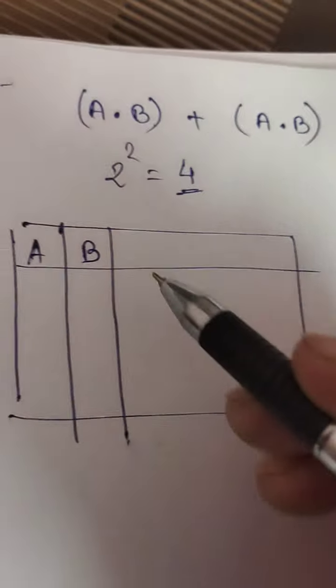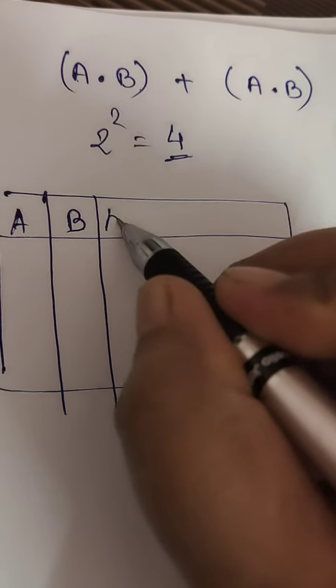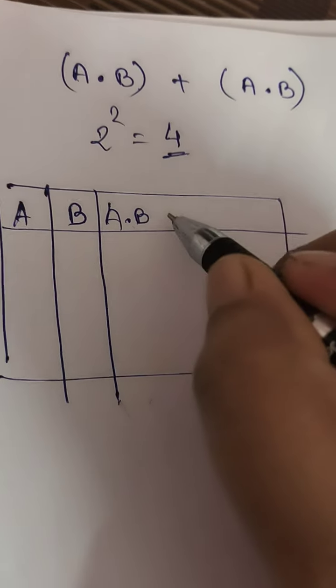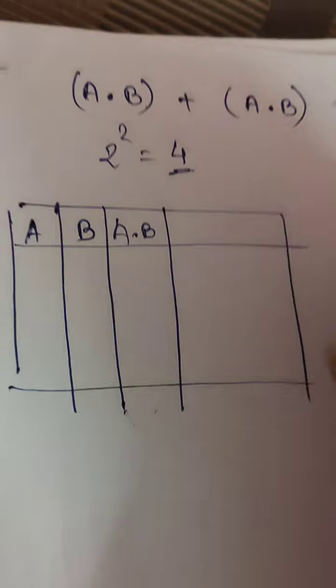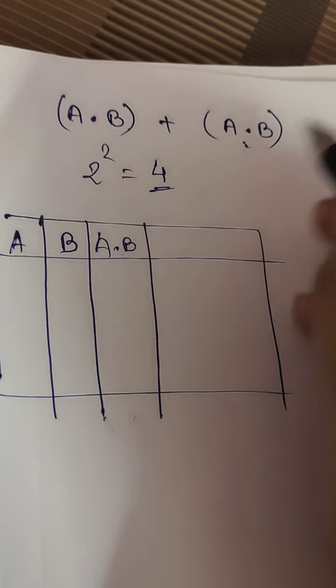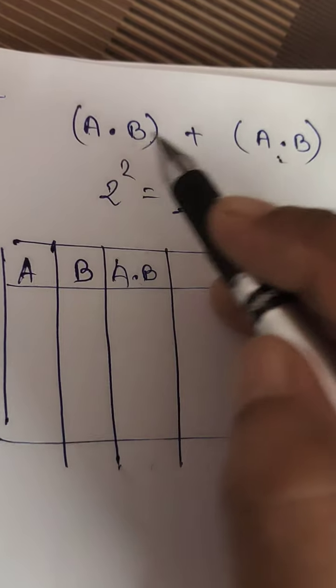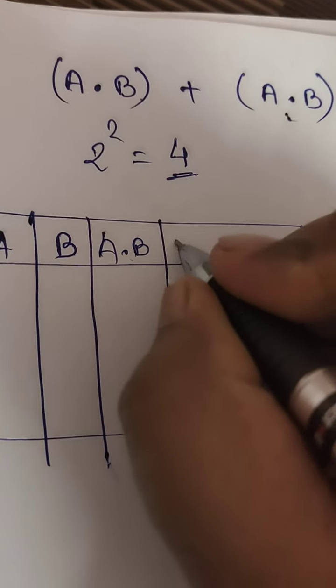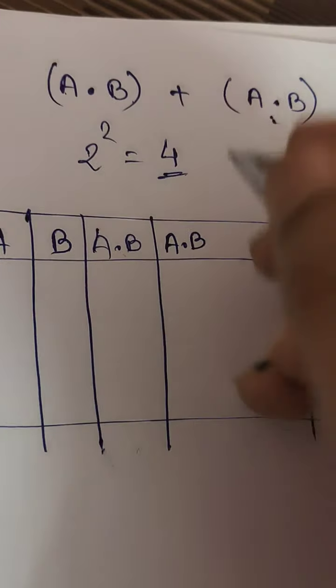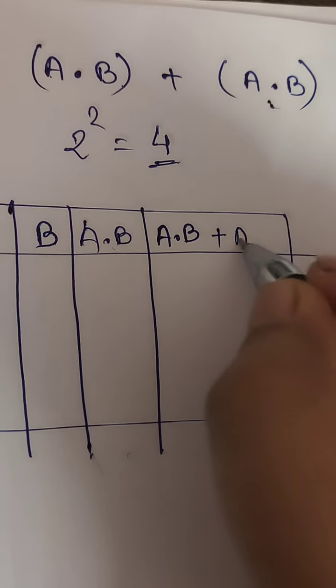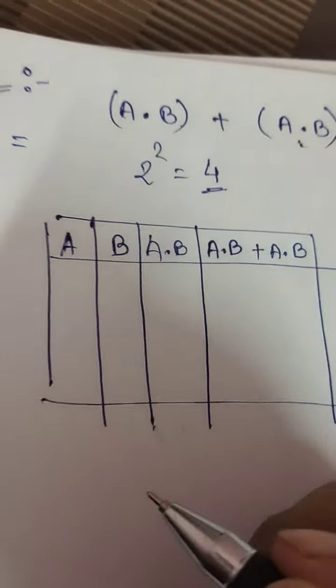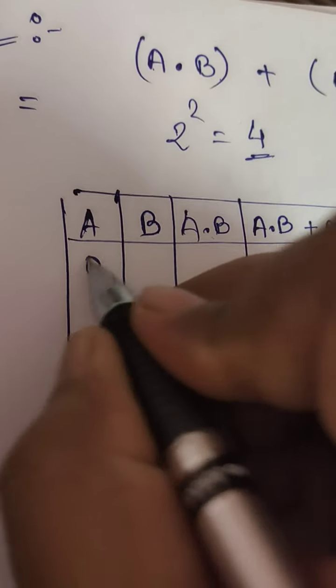See, we need to find out A·B first, so we find A·B. Now in this expression there is A·B, which we'll already get from this column. So now what do we do? We'll directly write A·B plus A·B here. A·B and then plus A·B.